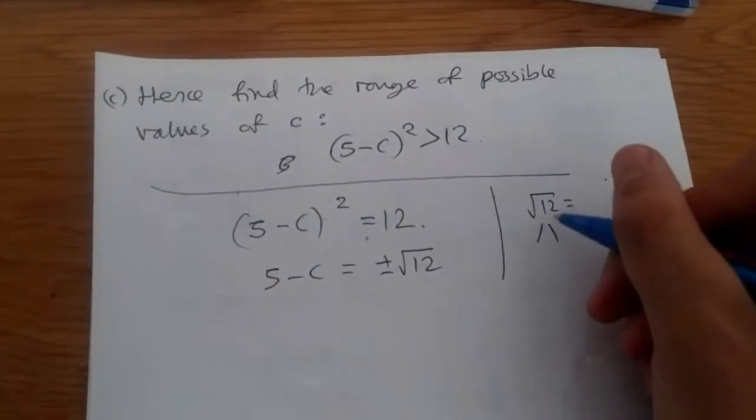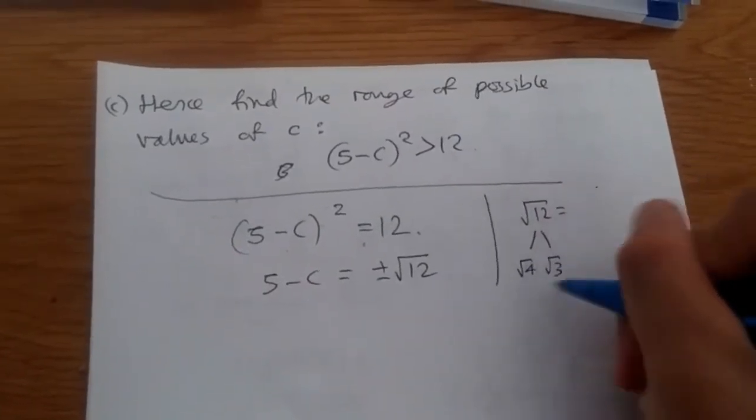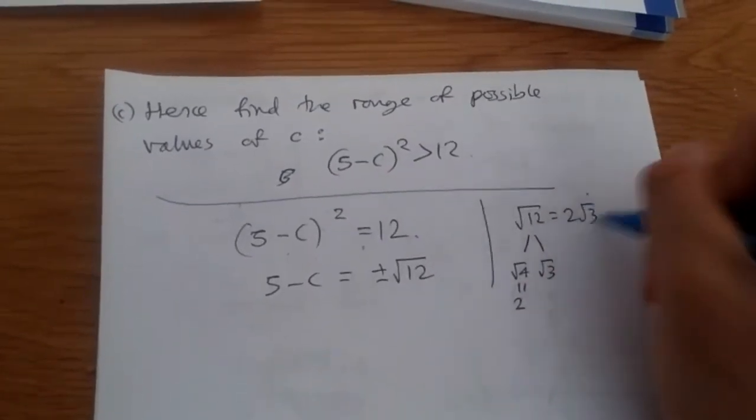So root 4 and root 3, which root 4 is, of course, 2. So, this is just 2 root 3. Easy.